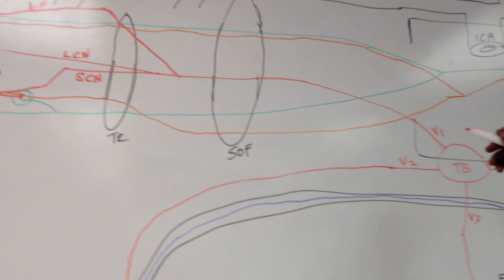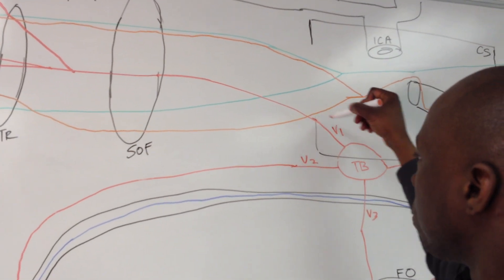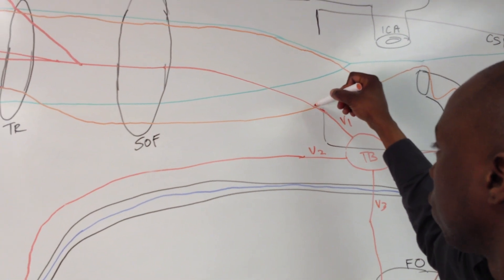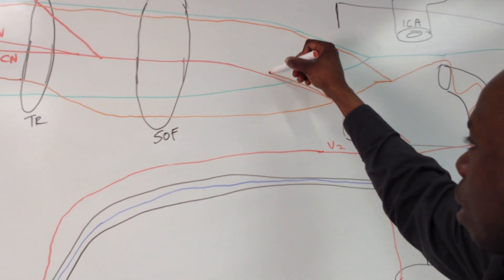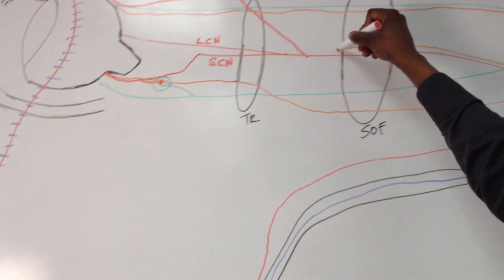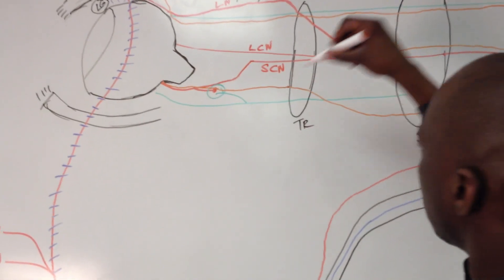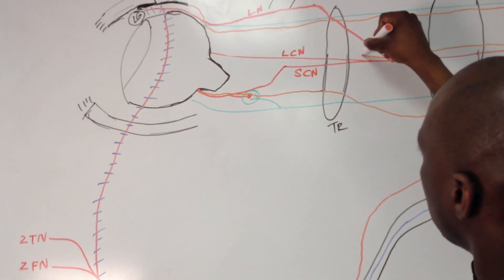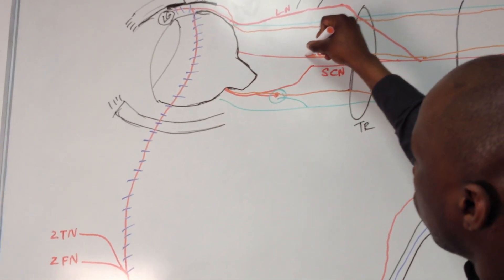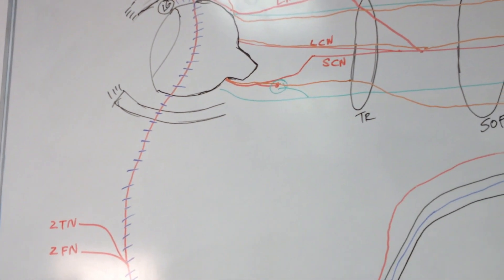The last branch from here is going to come down, and at the point where it meets V1, it's going to take off and follow V1 upward, then continue straight on as the long ciliary nerve, again into the back of the eye.